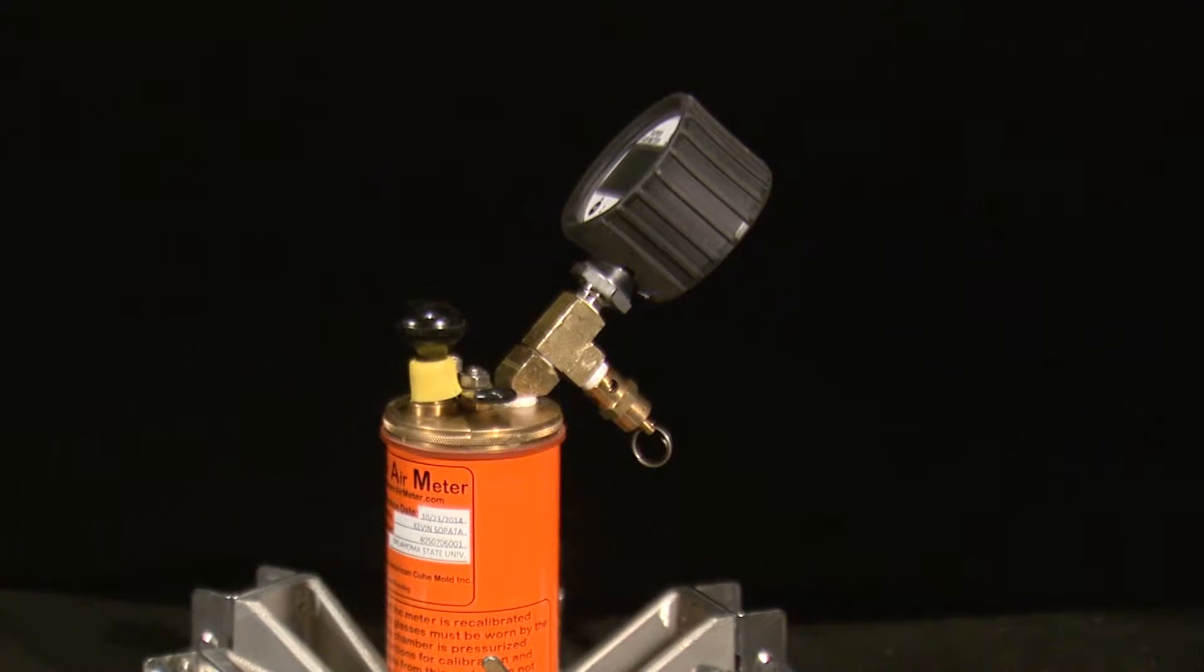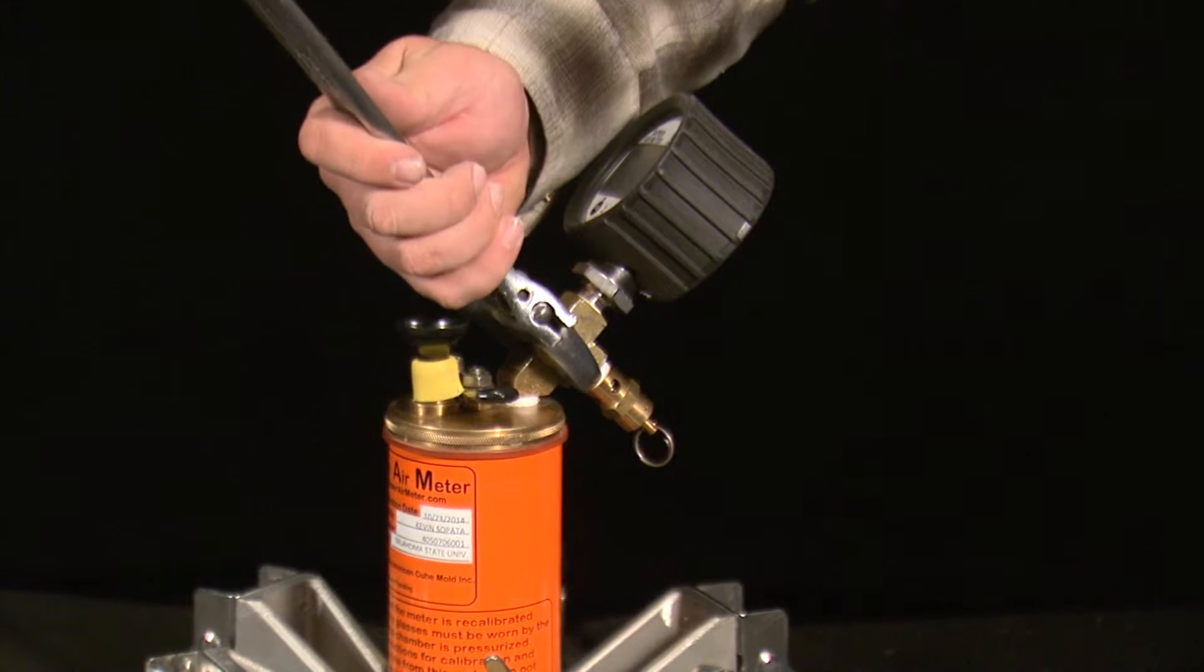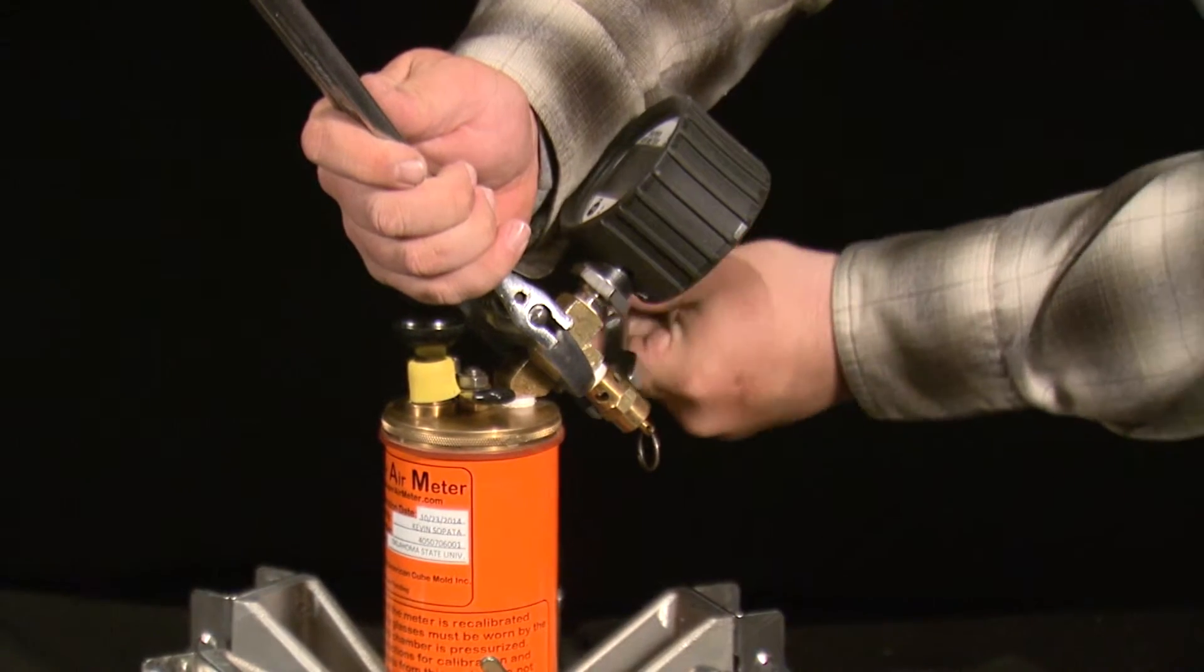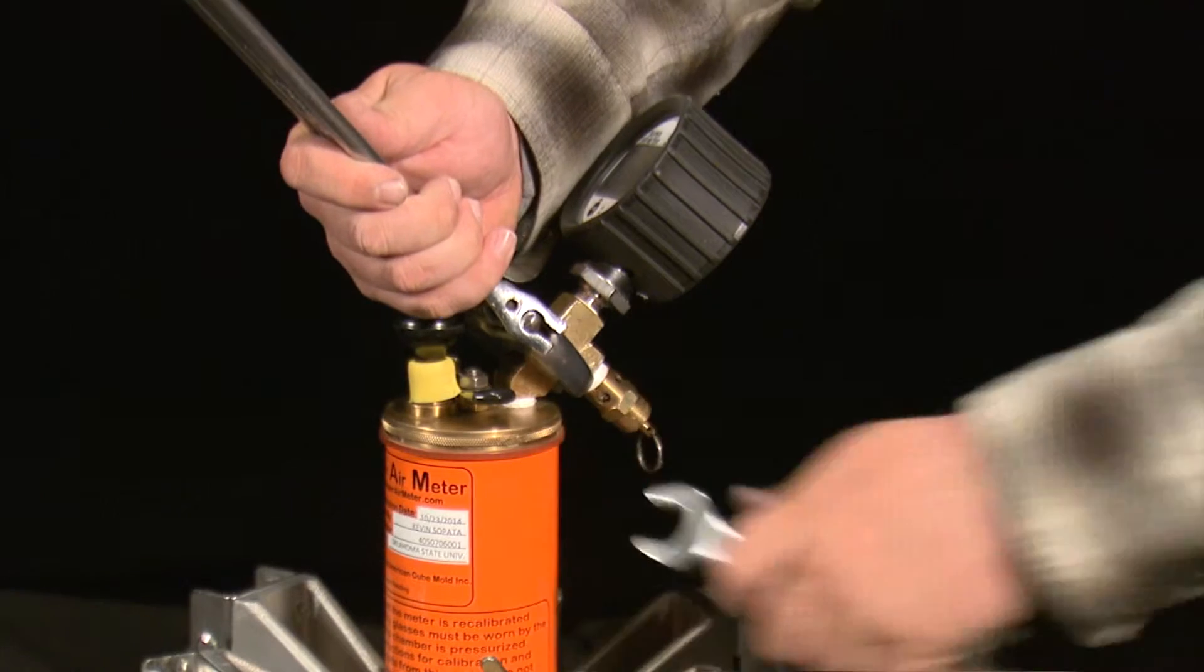Remove the old pop-off valve from the back of the brass elbow using the 11 sixteenths inch wrench and backing it up with a crescent wrench to prevent movement of the lower brass piece.